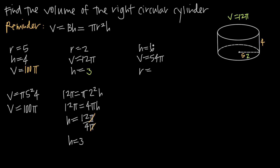In the last example, height is equal to 6, volume is 54 pi, and we need to find the radius. Labeling the cylinder: height is 6, volume is 54 pi, and the radius is unknown. Plugging the known values into the volume formula: 54 pi equals pi r squared times h, and we know the height is 6, so we plug in 6 for h.